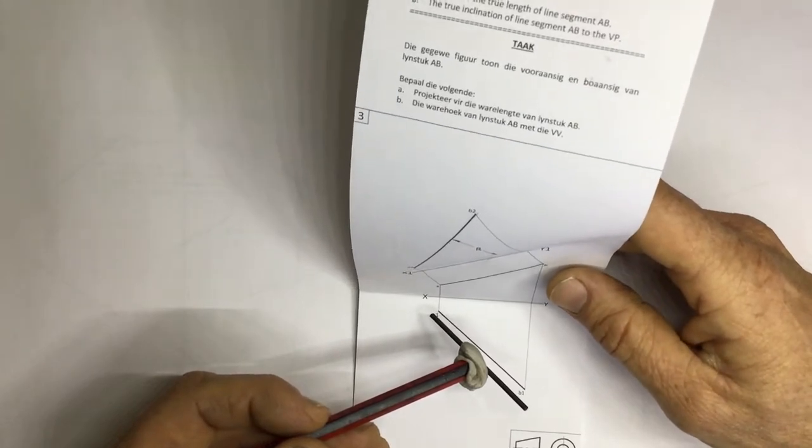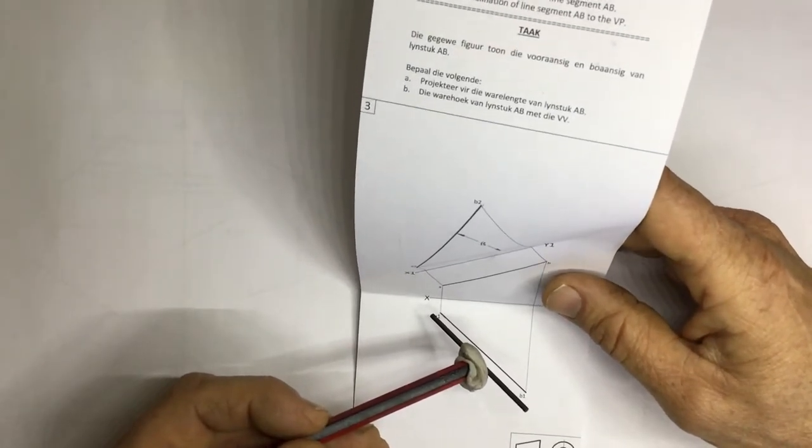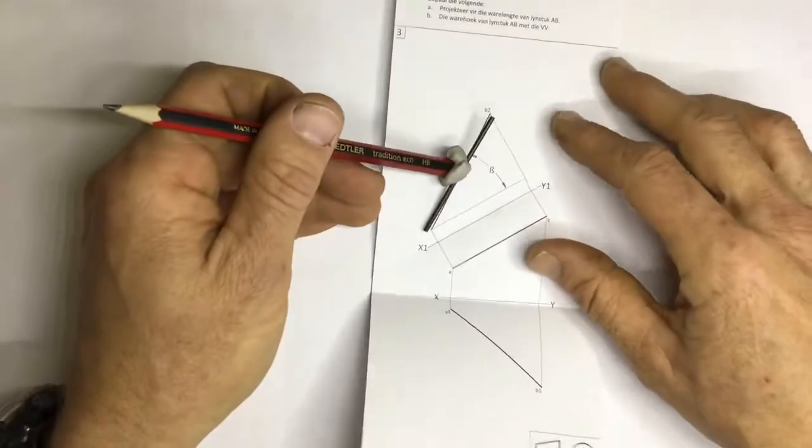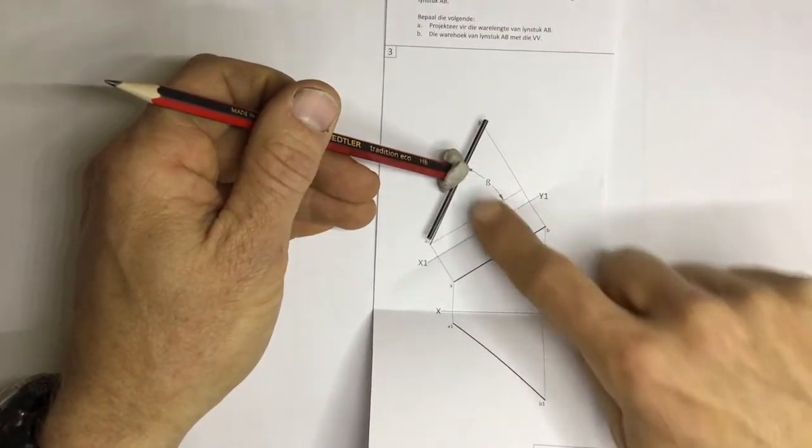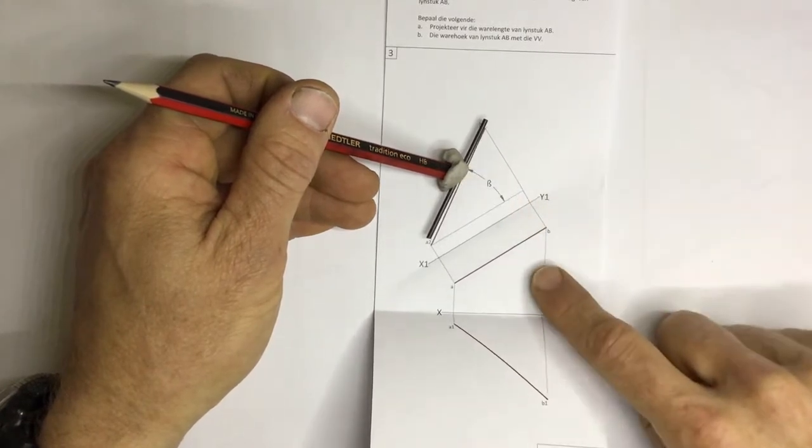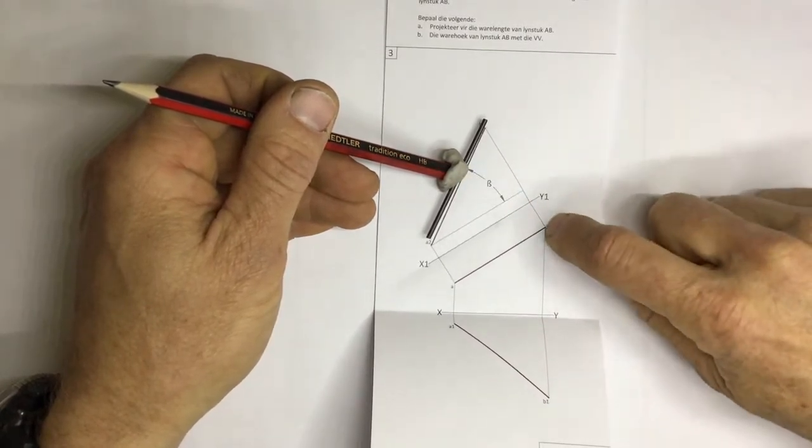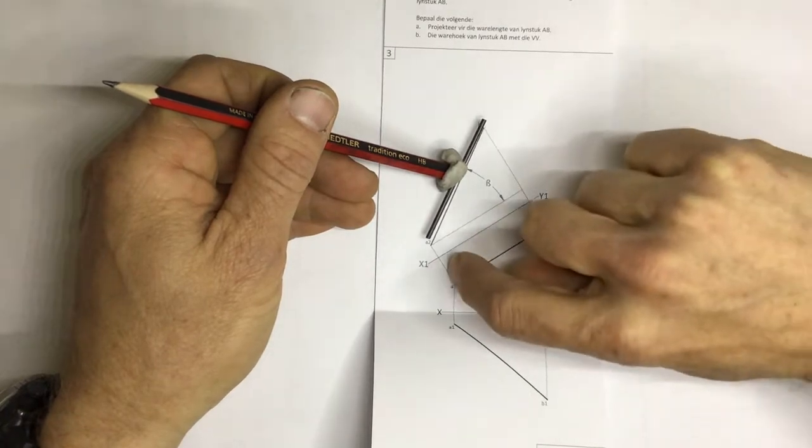What we need to be able to do is to look at this line segment at 90 degrees. Looking at this thing at 90 degrees, I will be able to see a true length of it. If you look at this, the lines coming off over here are going at 90 degrees.